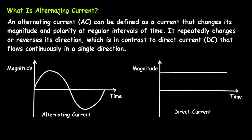An alternating current AC can be defined as a current that changes its magnitude and polarity. It is continuously changing its magnitude — here the magnitude is different, here it is maximum, and here it is 0. The polarity is positive in one half and negative in the other, so it is continuously changing at regular intervals of time.